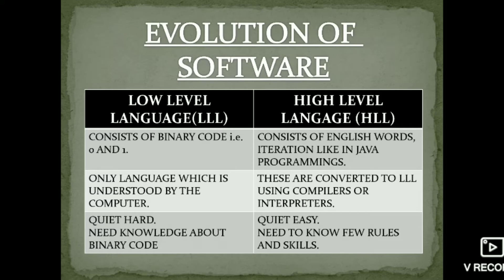Low-level language consists of binary code — zeros and ones — which is only understood by the computer. Next is high-level language, which consists of English words or instructions, like in Java programming. High-level language is converted to low-level language using compilers or interpreters. It is quite easy — you need to know just a few rules and skills.